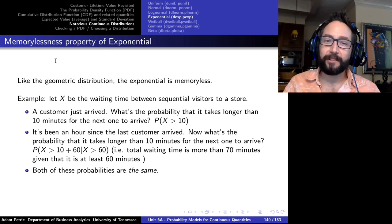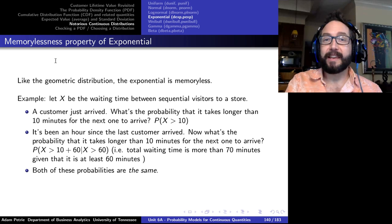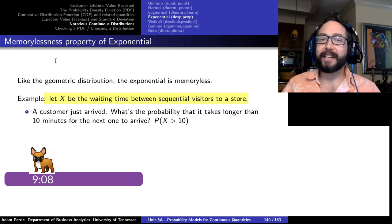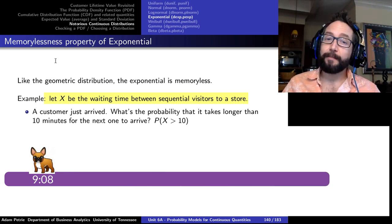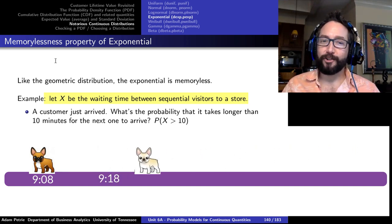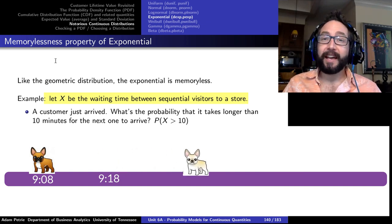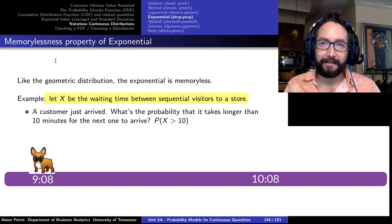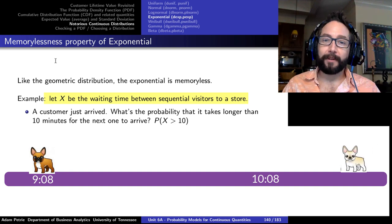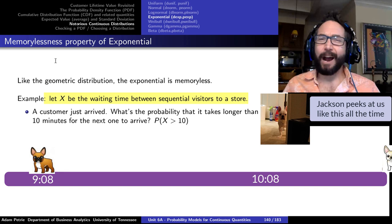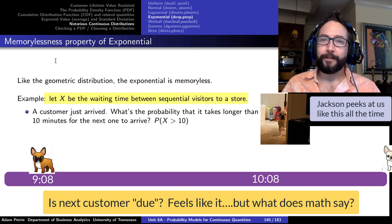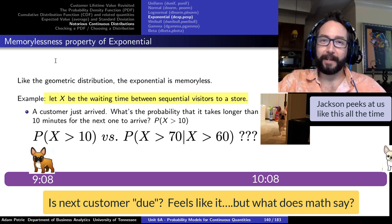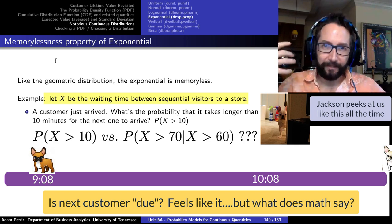Let x be the waiting time between sequential visitors to a store. If a customer just arrived, what's the probability it takes longer than 10 minutes for the next person? Now suppose it's been an hour since the last customer arrived — we might expect the next customer is due any minute, so intuitively those two probabilities should be very different. But because the exponential process is memoryless, those two probabilities are actually the same, regardless of how long we've already waited.